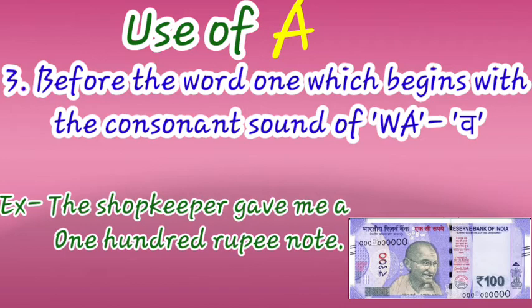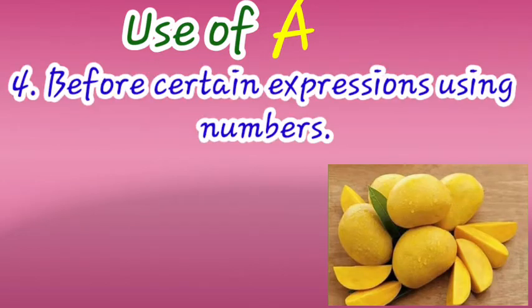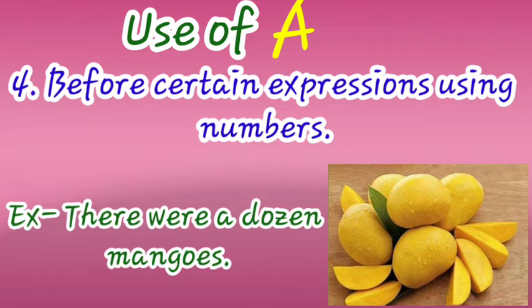The third use of 'a' is before the word 'one,' which begins with the consonant sound of W (व). So before 'one' or 'any one,' we use 'a.' For example: 'The shopkeeper gave me a one-hundred-rupee note.' The fourth use is before certain expressions using numbers. For example: 'There were a dozen mangoes.' Before 'dozen' we use 'a.'